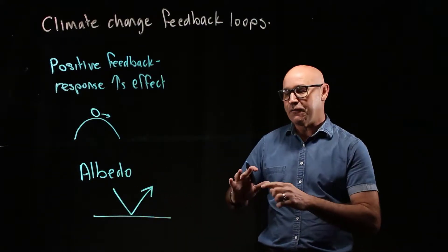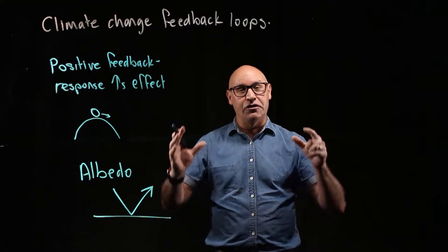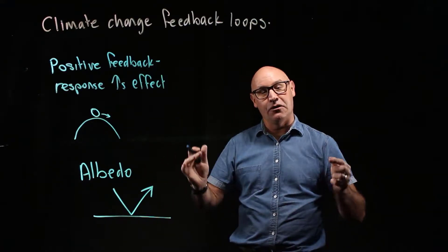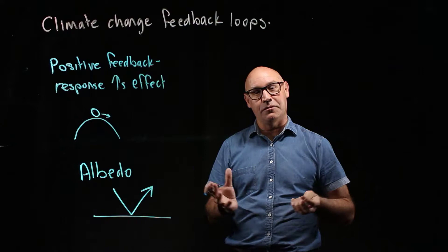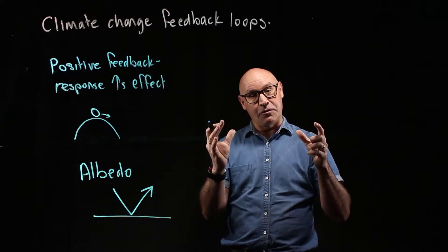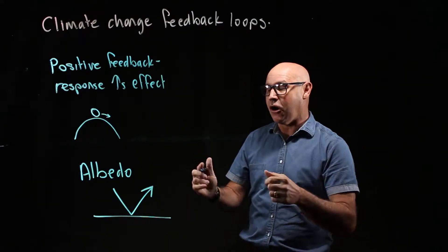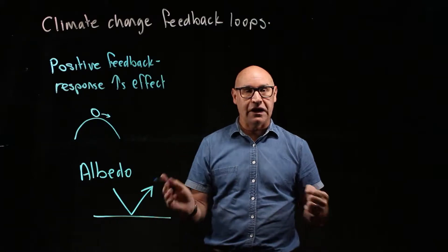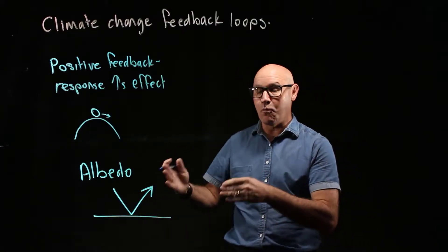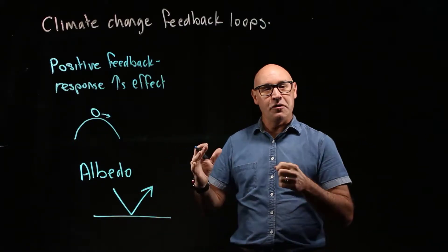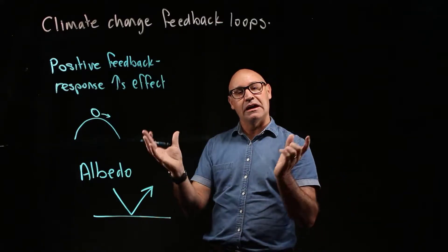Albedo is the reflection of light off something that's white. Something white reflects light and also radiant heat. Of course, we have ice on the polar caps — the North and South Pole are covered with ice — and that ice reflects sunlight and radiant heat away from the earth, preventing it from getting as hot.